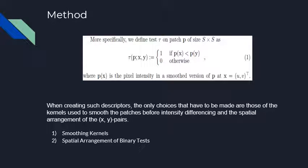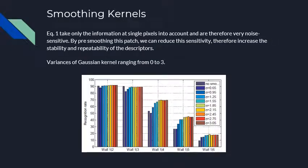Let's take a look at the method provided in the paper. They have defined a test TAU on the patch P of size S×S, where a pair of pixel intensities is compared with each other. The higher pixel is assigned 1 and the lower one is assigned 0. The parameters we can experiment with are: number one, smoothing kernels, and number two, spatial arrangement of binary tests. The equation is highly prone to noise as it is dependent only on a pair of pixels, so by smoothing we can reduce sensitivity and increase stability and repeatability of the descriptors.